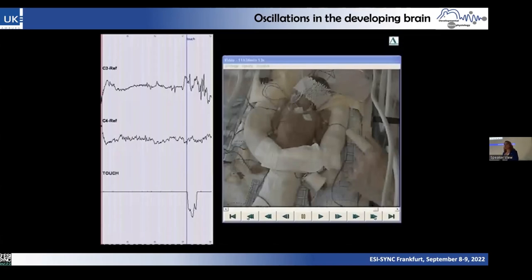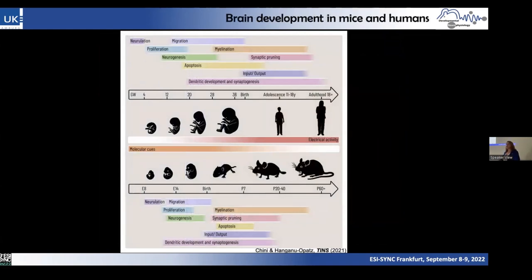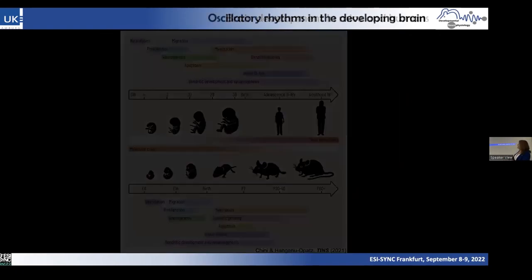The big question is how these rhythms are generated and what their function is. For ethical and technical reasons it is impossible to investigate this deeper in humans, so we need an animal model. Rodents are very good at modeling development because, as shown in a recent review we published, they share the same developmental events, just at a different timescale — so it is necessary to keep that timescale in mind.